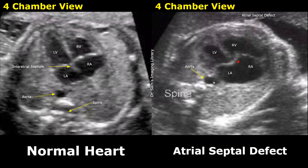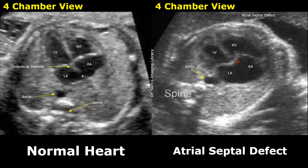Cardiac defects are also seen in a fetus with Edwards syndrome. The image on the left shows a normal heart with right and left atria, and a small wall between them — the interatrial septum. There is a small hole called the foramen ovale, which is normal in a fetus and is not an atrial septal defect. The image on the right shows an atrial septal defect where the interatrial septum is absent.